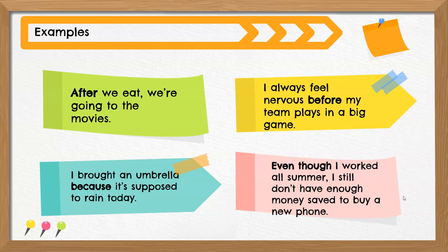Let's look at some examples. I'm going to read through the complex sentences on this slide while you notice how the ideas are connected by an AWUBAS word in each sentence. I'll explain the structure on the next slide. After we eat, we're going to the movies. I always feel nervous before my team plays in a big game. I brought an umbrella because it's supposed to rain today. Even though I worked all summer, I still don't have enough money saved to buy a new phone.